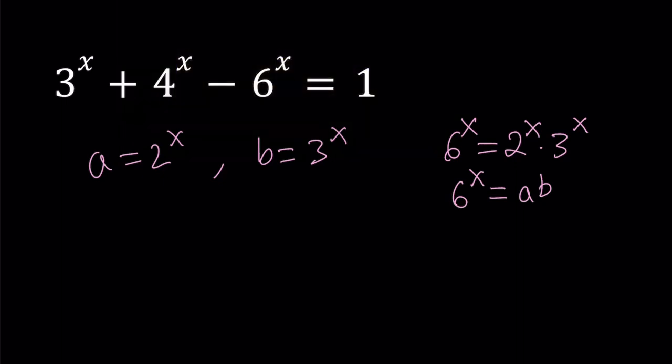So 3 to the power x is b. 4 to the power x is what? Well, 4 is 2 squared so it's just a squared. 6 to the power x is ab and this is equal to 1.